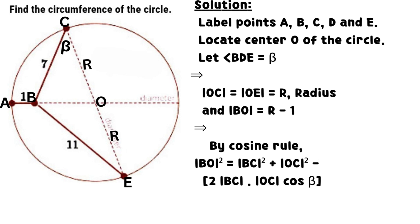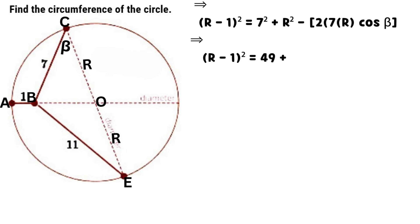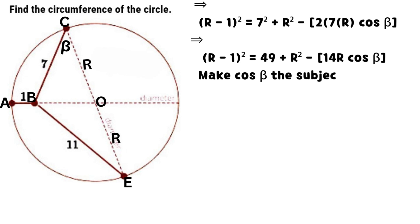It follows that, by the cosine rule, the square of line BO equals the sum of the square of line BC and the square of line OC, minus 2 times the product of line BC and line OC times cosine beta. The square of (R minus 1) equals the sum of the square of 7 and the square of R, minus 2 times the product of 7 and R times cosine beta.